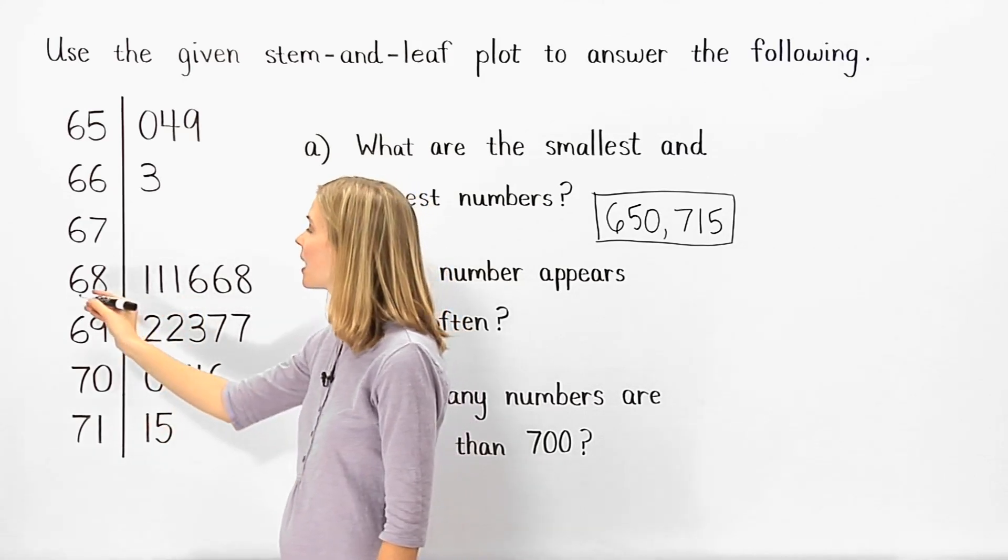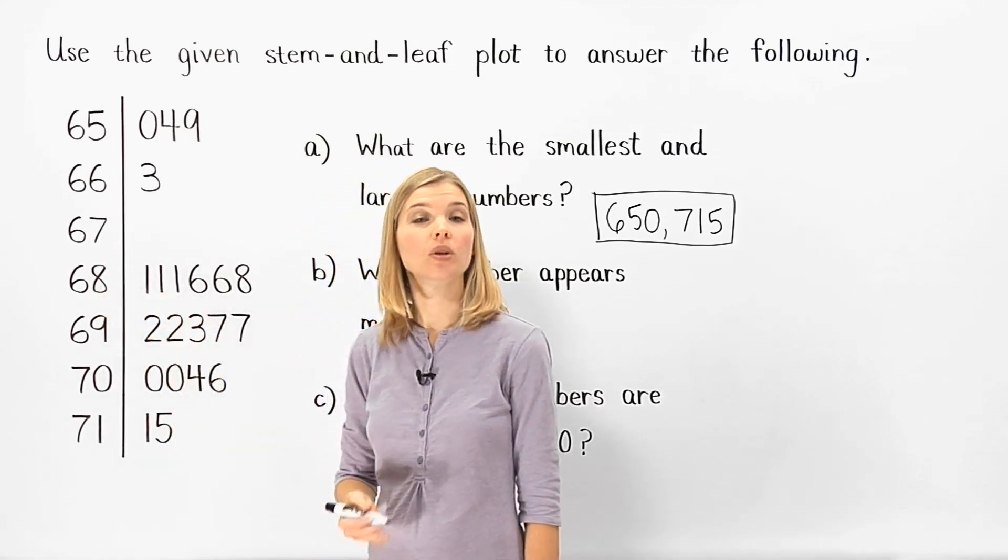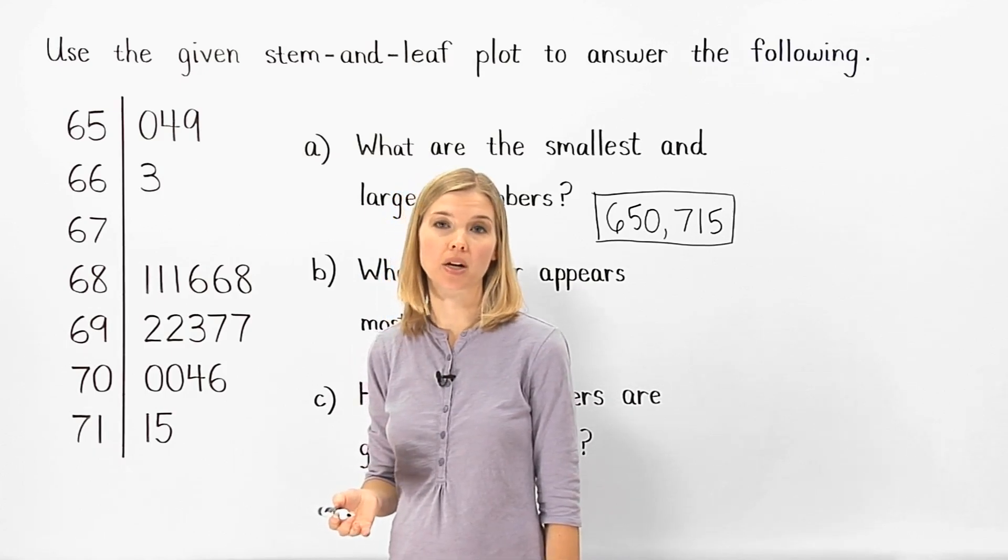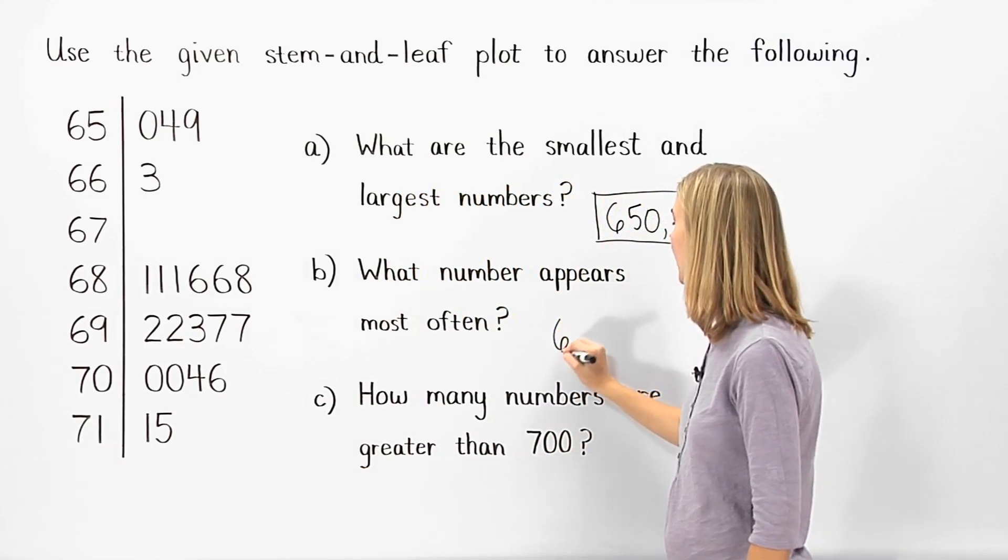This means that the number 681 occurs three times in the data set, which is more often than any other number. So the number that appears most often is 681.